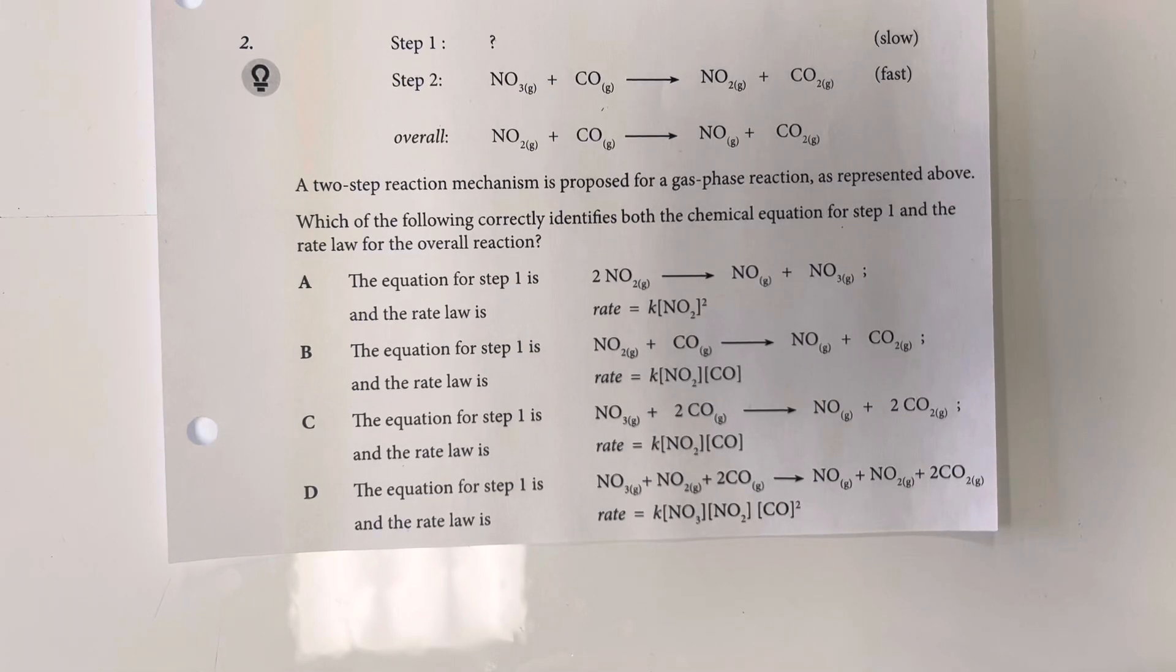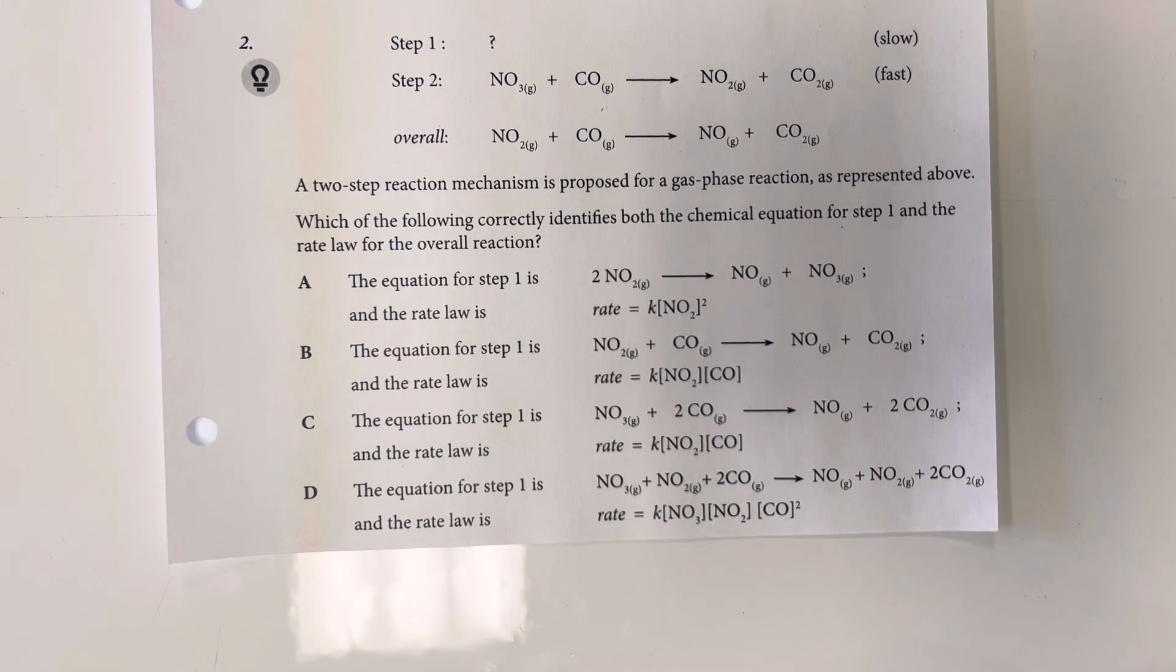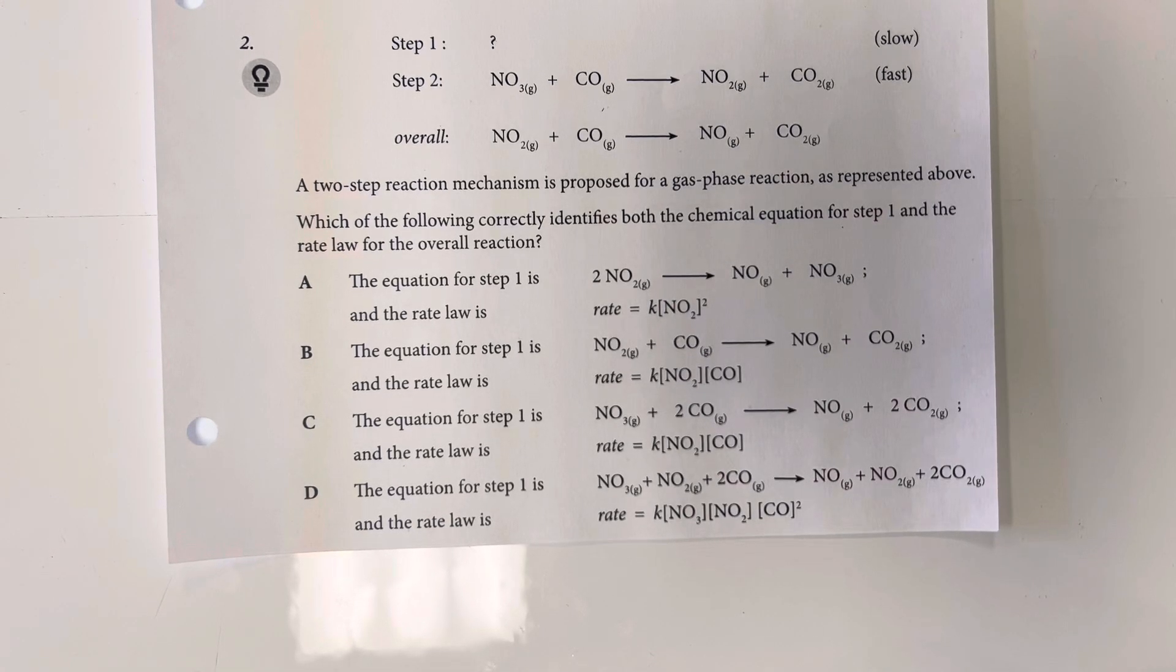A two-step reaction mechanism is proposed for the gas phase reaction as represented above. Which of the following correctly identifies both the chemical equation for step 1 and the rate law for the overall reaction? So again,